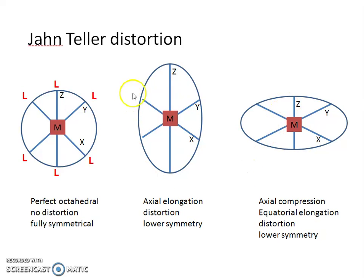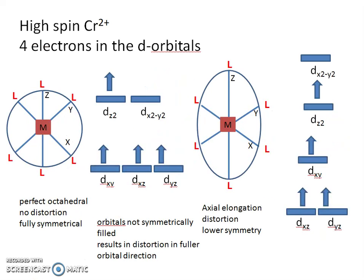In both cases — axial elongation or axial compression — there is a loss of symmetry. Today we will be looking at an example where Jahn-Teller distortion happens. We will be looking at Cr²⁺ in the high spin state. This complex will have four electrons in the d orbitals.